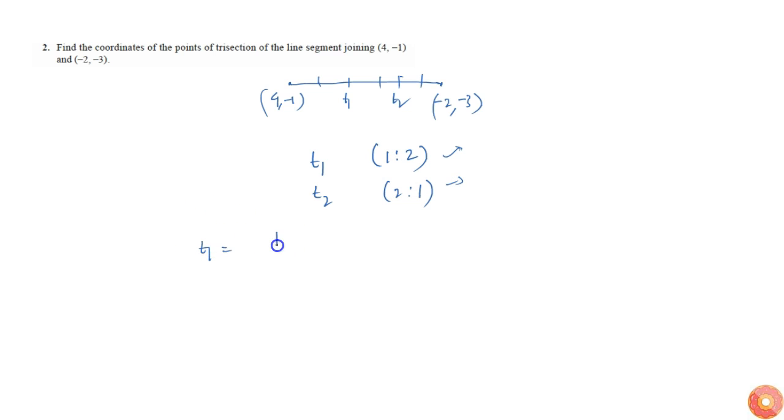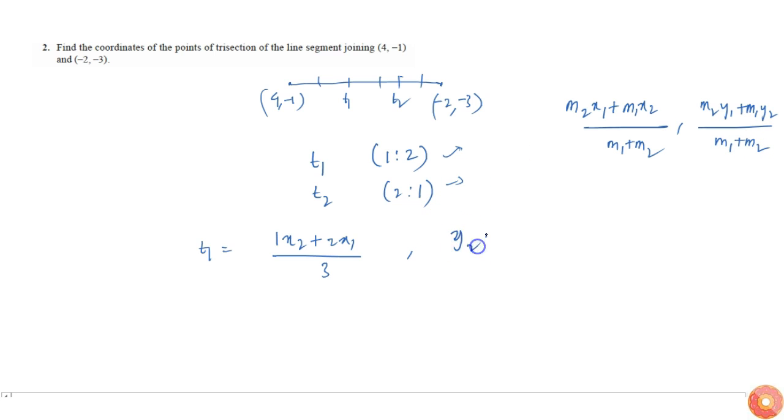So t1 will become (1·x2 + 2·x1)/3, (1·y2 + 2·y1)/3. I am just using this formula: (m2·x1 + m1·x2)/(m1 + m2), and similarly (m2·y1 + m1·y2)/(m1 + m2). So here I will get (x2 + 2x1)/3, (y2 + 2y1)/3.